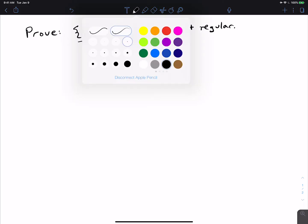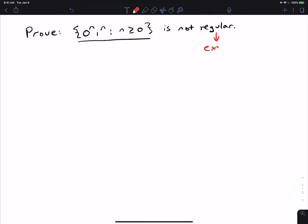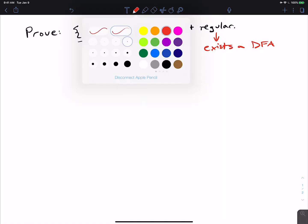So remember that regular means that there exists a DFA for the language. And if we want to show that this is not regular, then what we have to do is to show that there does not exist a DFA for this language.